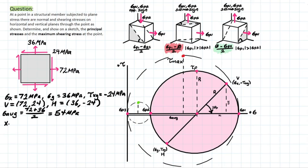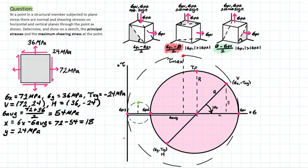We're going to use the x and y components created by the radius to determine all important points of this triangular element, including the principal theta. The x component is sigma x minus sigma average, which is 72 minus 54, equal to 18. And we consider the shear input for the y component, which is 24 MPa, since the y-axis is the shear stress. We then use Pythagoras to determine the radius of this Mohr's circle: 18 squared plus 24 squared gives us a radius of 30.